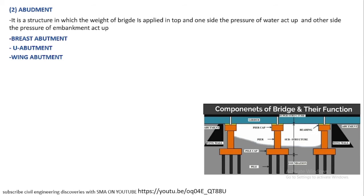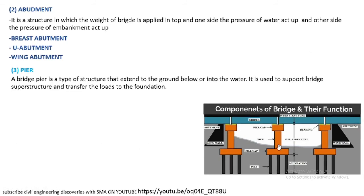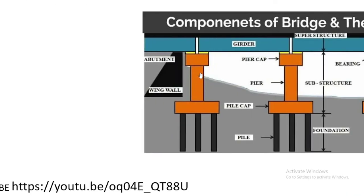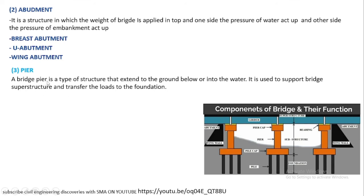Abutment is classified into different types: blade-type abutment, U-abutment, and wing abutment. Pier is the main part of the bridge where the superstructure load comes and is transferred down to the foundation. Looking at the diagram, the girder sits on the pier with the bearing between the pier cap and the girder. When the load comes on top, it is transferred down to the pile cap, then to the piles, and finally to the earth.